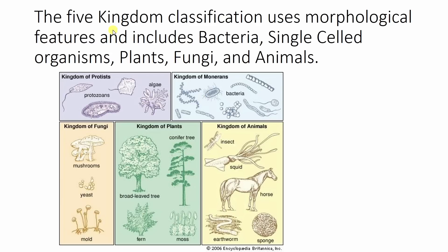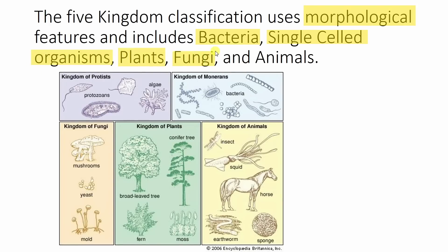We also have the five kingdom classification, which is an older style classification system, but it still stands today and is included in your specification. It uses morphological features — size, shape, how an organism looks — to classify it. It includes five different kingdoms: firstly the bacteria kingdom, then single-celled organisms, then plants, then fungi, and then animals.